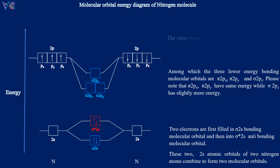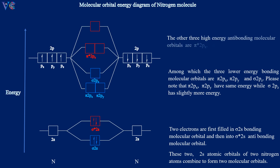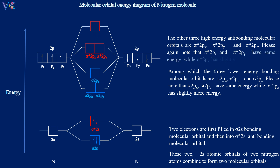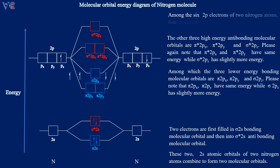The three high energy antibonding molecular orbitals are π*2Px, π*2Py, and σ*2Pz. Please again note that π*2Px and π*2Py have the same energy, while σ*2Pz has slightly more energy. Among the six 2P electrons of two nitrogen atoms, four electrons are filled first into π2Px and π2Py, and then into σ2Pz.